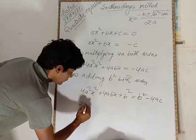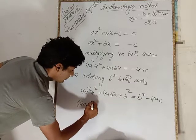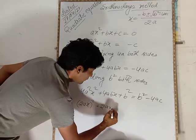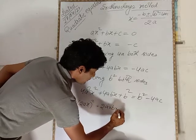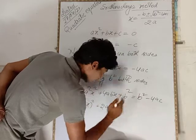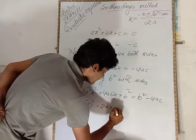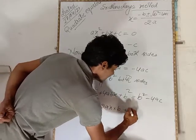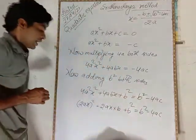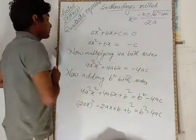Now we can write this as 2ax and 2ax times 2ax, which means 2ax squared.